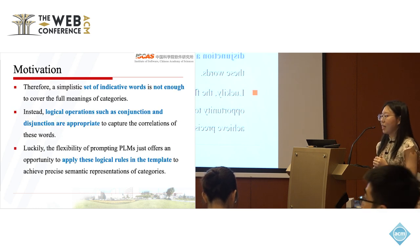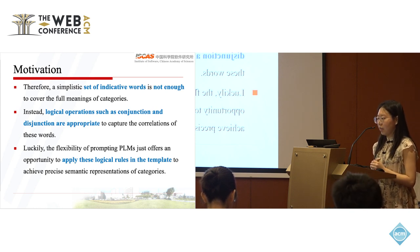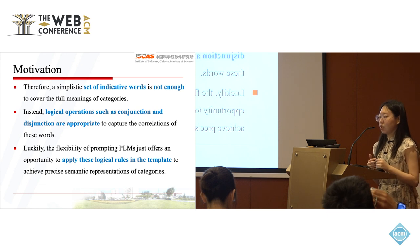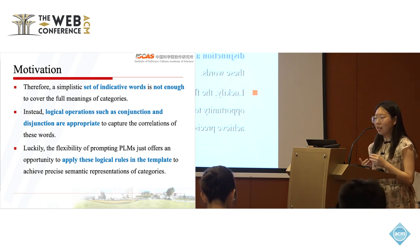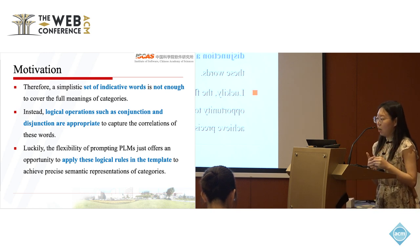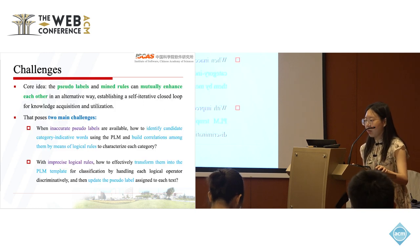Therefore, a simplistic set of indicated words is not enough to cover the full meaning of categories. Instead, logical operations such as conjunction and disjunction are appropriate to capture the correlations of these words. Luckily, the flexibility of prompting PLMs offers an opportunity to apply these logical rules in the template to achieve precise semantic representation of categories.